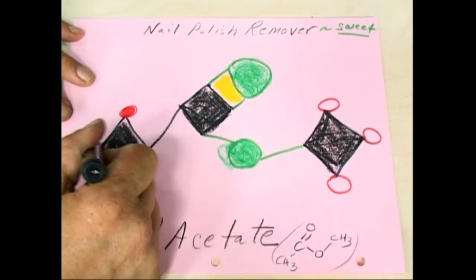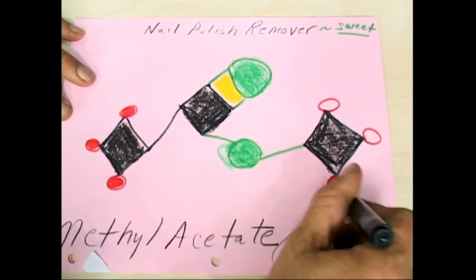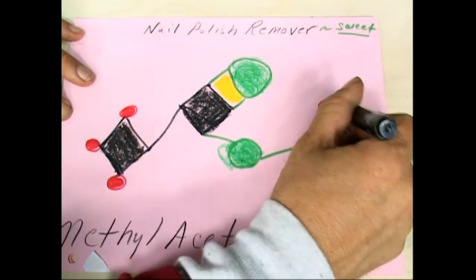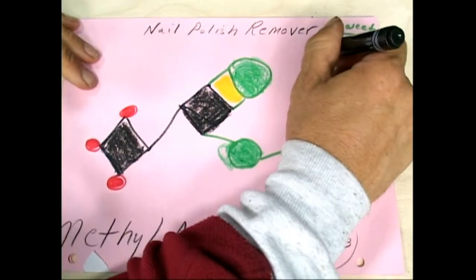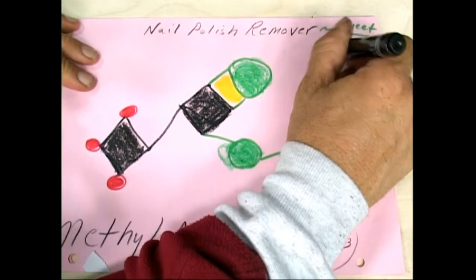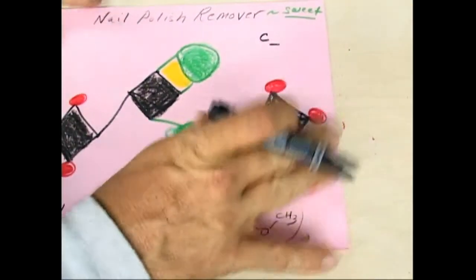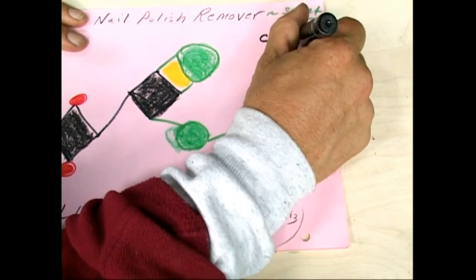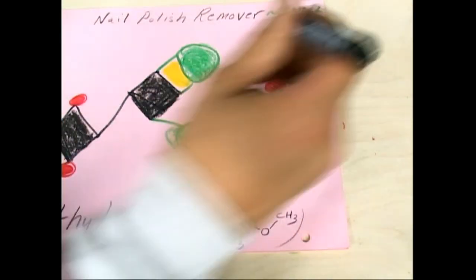Again, you can go through and do the formula on this. What do we have here? We got C's, we got O's.